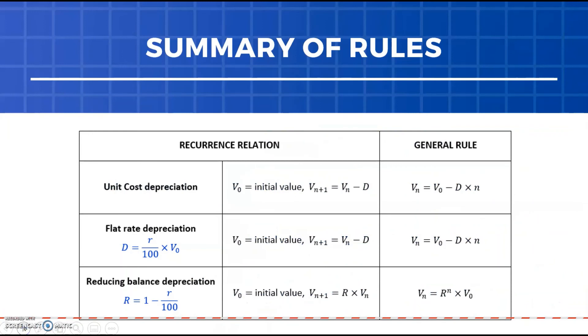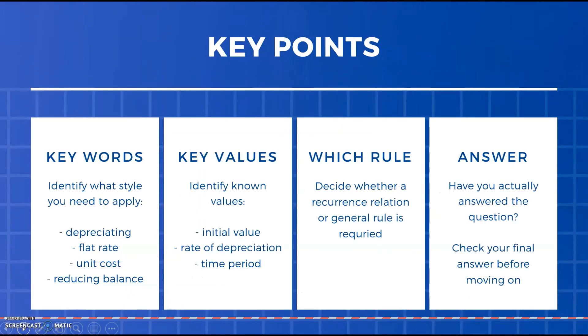That takes us through the three key methods of depreciation. Here's just a summary of all your rules. Make sure you have these in a format that you understand in your bound reference and a way that you can refer to them quickly and understand what to do when. Some key pointers around when you're looking at these questions: they won't be spelt out that it is this particular type of depreciation you're looking for. When you're reading a question you want to be identifying what are the key things they're telling me. Yes it's depreciating, and which of these three methods are they using, so you can refer back to your rules and know what to do from there.